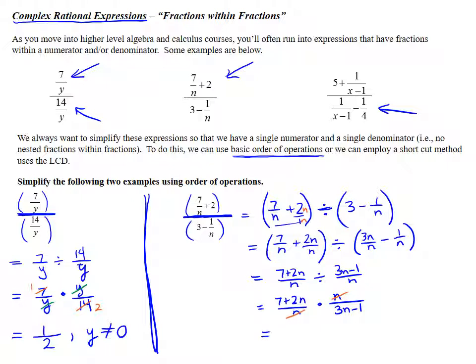And what we're left with is a numerator—I'm going to write this numerator in descending order—2n plus 7 and my denominator of 3n minus 1. The n canceled, so I should show that domain restriction as n is not equal to 0.